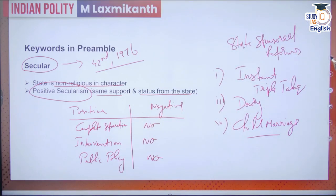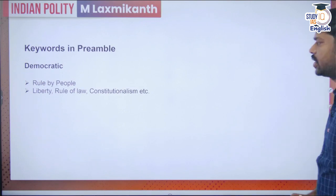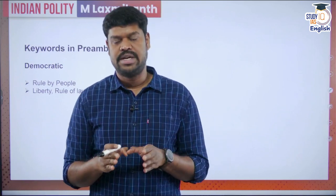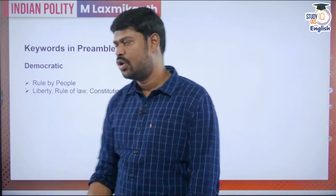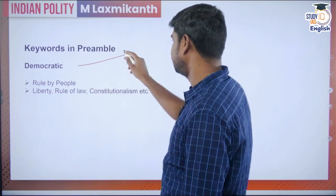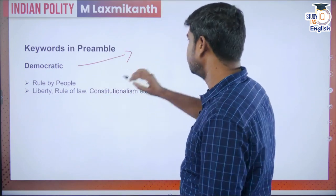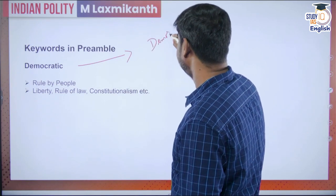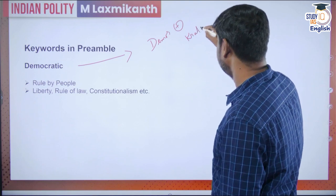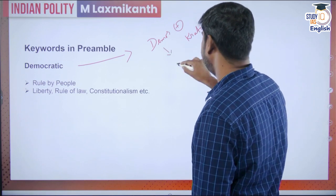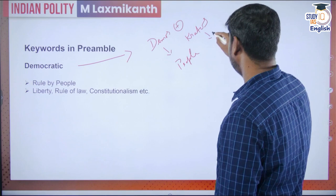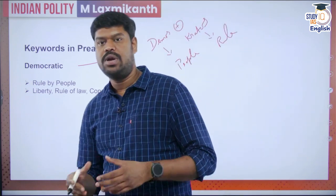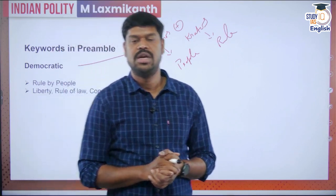Now we move to the next keyword: 'democratic.' Democratic means it is ruled by the people. The word 'democratic' comes from two words: 'demos' meaning people, and 'kratos' meaning rule. So it is nothing but 'ruled by people.' In a democracy, anyone who rules the country can do so only by the popular support and will of the people.